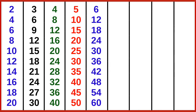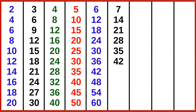7 ones are 7, 7 twos are 14, 7 threes are 21, 7 fours are 28, 7 fives are 35, 7 sixes are 42, 7 sevens are 49, 7 eights are 56, 7 nines are 63, 7 tens are 70.